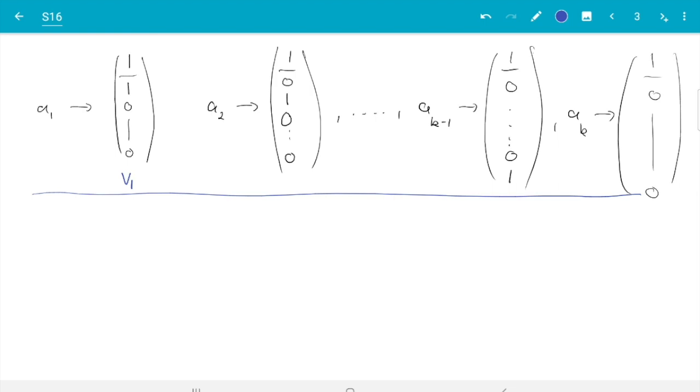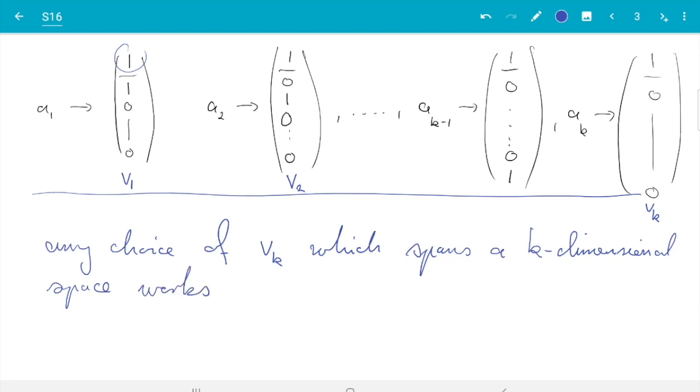So let's call it v_1, v_2, up to v_k. And what I say is, any choice of these vectors v_k, which spans a k-dimensional space, if we count the intercept here, this would work. So there is a choice.